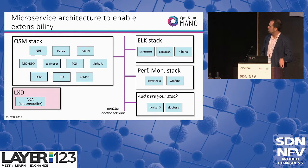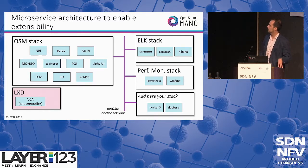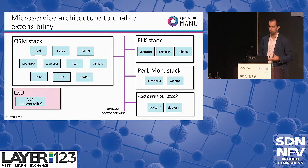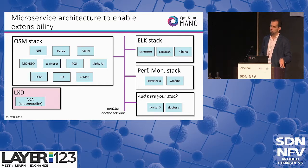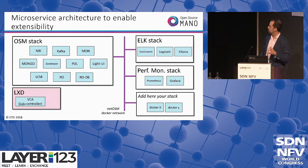All OSM components are now deployed with Docker. We have an OSM stack containing all the containers — NBI, Kafka, MON, and others — moving to a microservice architecture that enables better scaling policies. We still have LXD, used for running the Juju controller and all the charm logic. The architecture has a Docker network called NetOSM, to which any other Docker stack can be connected. In release four, we are showcasing an ELK stack for management and a combination of Prometheus and Grafana — Prometheus is a time series database and Grafana is a tool to display metrics — combined in a performance monitoring stack.